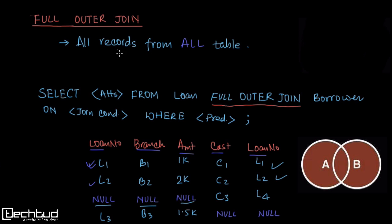In full outer join, we will have records from all the tables — in this case both tables. Wherever we don't have any matching record for a particular tuple, we use null. The syntax is very similar — instead of writing LEFT or RIGHT, we simply write FULL, giving us FULL OUTER JOIN. In the output, for a record from the right table with no matching entry in the left, we use null. Similarly, for a record from the left table with no matching record in the right, we use null. This is the complete output when we use full outer join on the two tables.